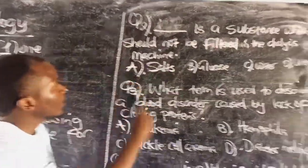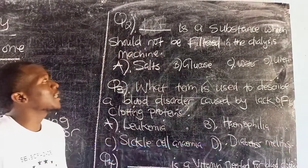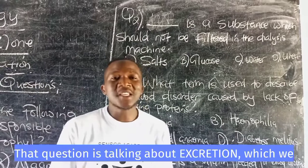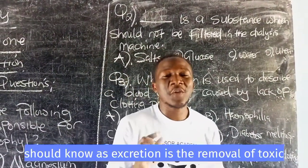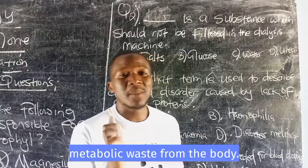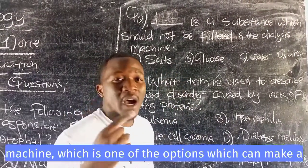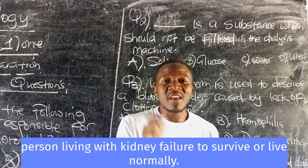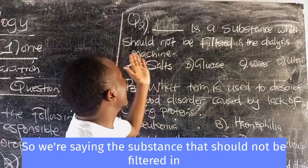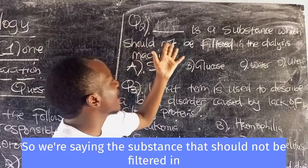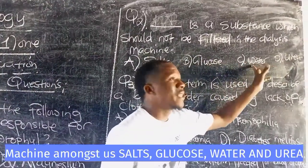Question two: Dash is a substance which should not be filtered in the dialysis machine. That question is talking about excretion — excretion is the removal of toxic metabolic waste from the body. In this case, we are talking about the dialysis machine, which is one option that can allow a person living with kidney failure to survive or live normally. The answer options are: salts, glucose, water, and urea.